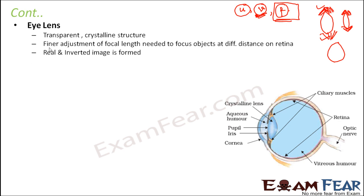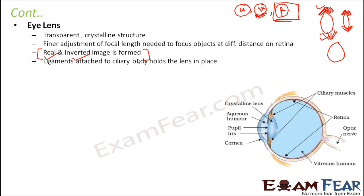The image which is formed on the retina is always a real and inverted image, because for most cases the image formed is always real and inverted with a convex lens. The ligaments attached to the ciliary body hold the lens in place, because if the lens were not fixed at a particular position, image formation would not take place properly. So the lens must be present at the correct position.